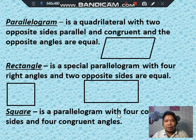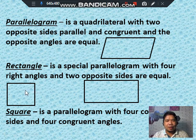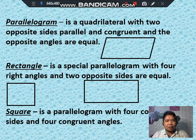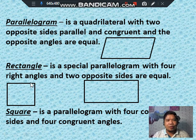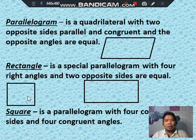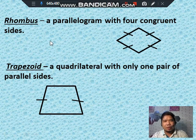A square is a parallelogram with 4 congruent sides and 4 congruent angles. Four congruent sides means 4 equal sides and 4 equal angles. Here is the illustration for a square.